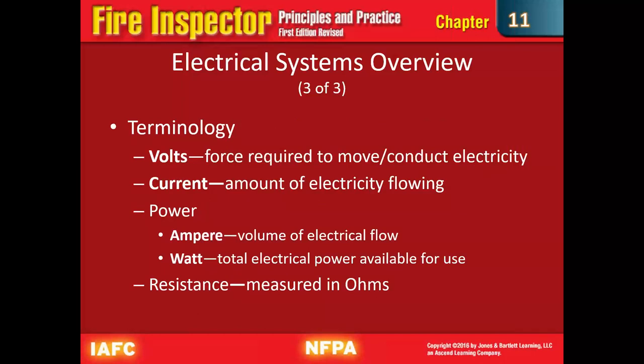A little bit of terminology: volts is the force required to move or conduct electricity. Current is the amount of electricity flowing. Amps give you the power — the volume of electrical flow. Watts is the total electrical power available for use. As firefighters, you can relate this to hoses and hydrology — how much pressure, how many gallons, what you're able to move by the size of your hose. Resistance, measured in ohms, is similar to friction loss in hose lines.